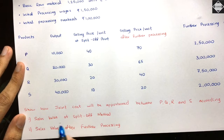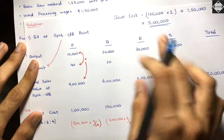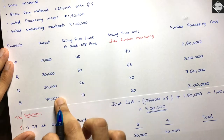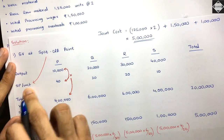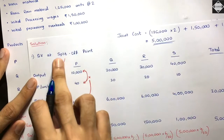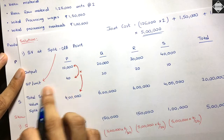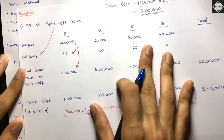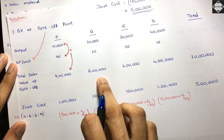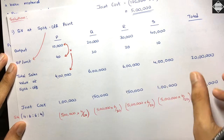Now let's start with the first variant: sales value at split off method. Create four product columns P, Q, R, S plus a total column. Output at split off: P = 10,000, Q = 20,000, R = 30,000, S = 40,000. Selling price per unit at split off: P = ₹40, Q = ₹30, R = ₹20, S = ₹10. Multiply: P = ₹4 lakh, Q = ₹6 lakh, R = ₹6 lakh, S = ₹4 lakh. Total = ₹20 lakh.